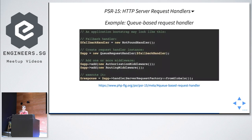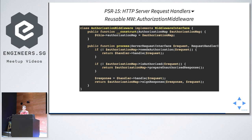The authorization middleware implements the PSR15 MiddlewareInterface with a process() method taking a PSR7 request and PSR15 RequestHandler. The code checks: if no authorization needed, pass to the request handler; if not authorized, return an error response; if authorization required, pass to the handler which returns a PSR7 response, then sign it or return it. The middleware is not concerned with how the request handler is implemented — it just uses it to produce a response when preconditions are met.